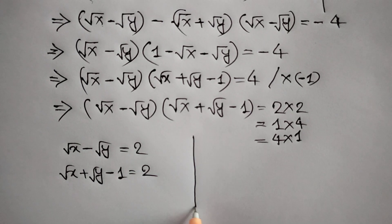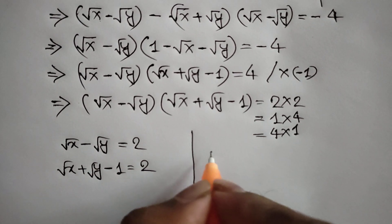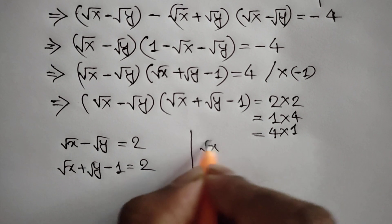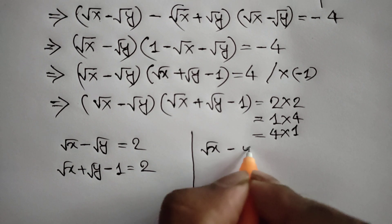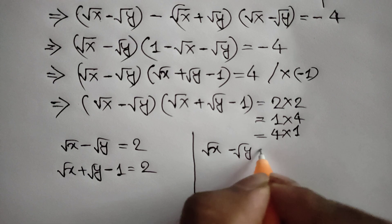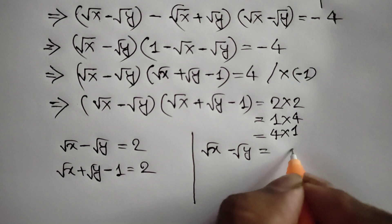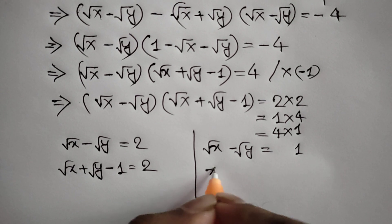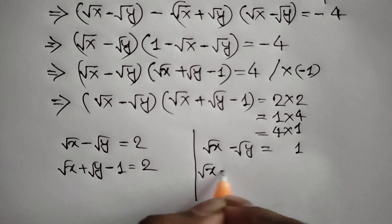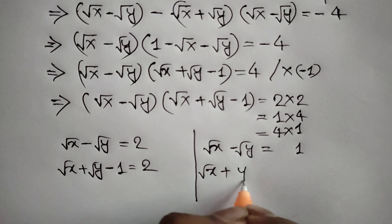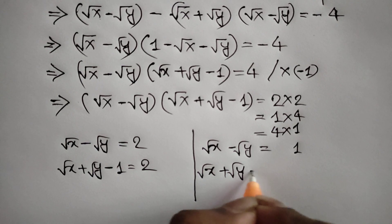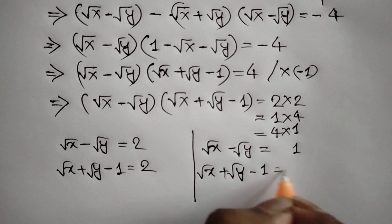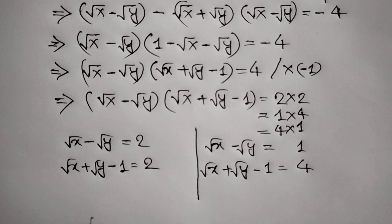When square root of x minus square root of y is equal to 1, then square root of x plus square root of y minus 1 is equal to 4.